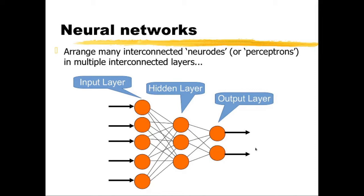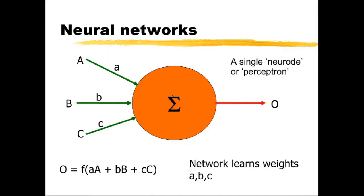Basically what you do is give the network lots of these patterns. The system learns the weights placed on the connections. Looking at one neurode by itself, it's very simple — just a simple mathematical operator. It takes inputs A, B, and C and learns weights a, b, and c, so that the output is some simple function of: weight a times input A, plus b times B, plus c times C. In doing that learning, it's trying to minimize the errors in the predicted outputs compared with the actual outputs. Once you've trained it, you can apply it to making real predictions.